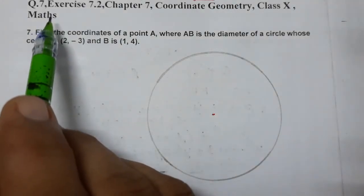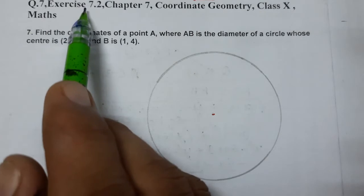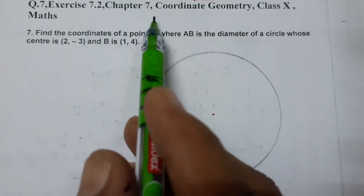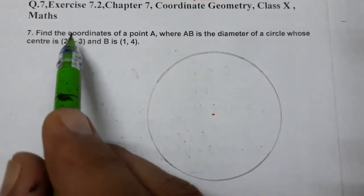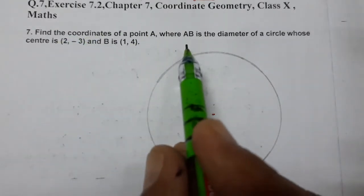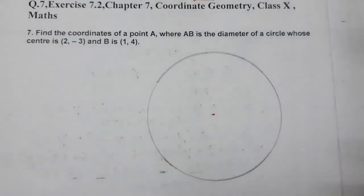Hello students, today we are going to do question number 7 of exercise 7.2, chapter 7, Coordinate Geometry, Class 10 Maths. Find the coordinates of a point A, where AB is the diameter of a circle.